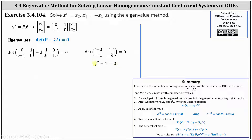Solving for lambda, we subtract one on both sides and then take the square root of both sides of the equation. This gives us lambda equals plus or minus i. Because we have two complex eigenvalues, this does affect our approach on how to determine the general solution.